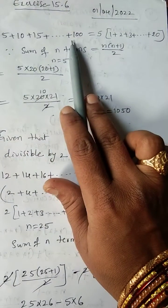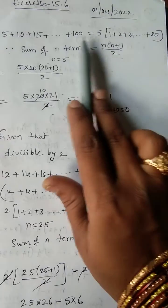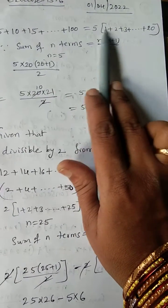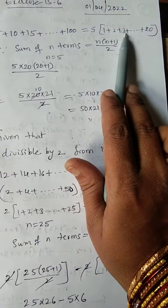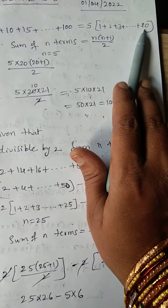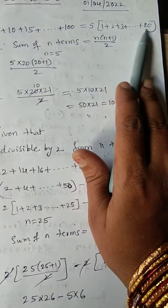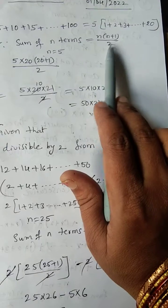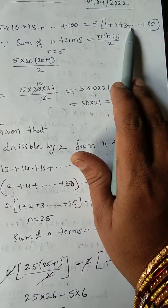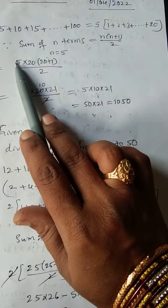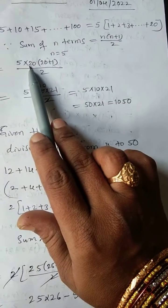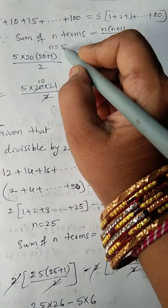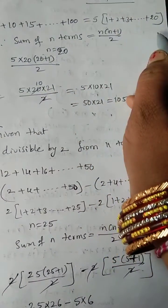Here 100 is there, and 5×20 is 100, so 20 will come here. Now this bracket value: 1 + 2 + 3 + ... up to 20. So we use the sum of n terms formula: n(n+1)/2. We should use this formula for this bracket. Here n = 20 (last term is 20).